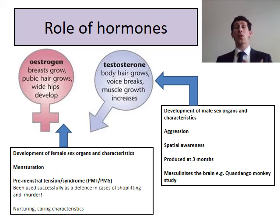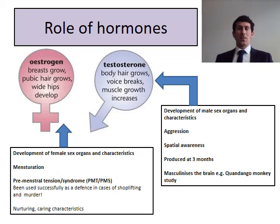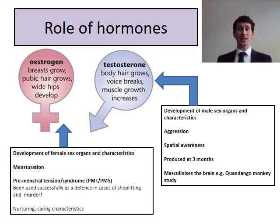Testosterone, on the other hand, is linked to body hair in men — on the face and chest — deepening of the voice, muscle growth, and the development of male sex organs and characteristics. Testosterone has been heavily linked to aggression; the way it changes the brain can result in more aggressive behaviour and also better spatial awareness. It's produced at three months and during adolescence. One key thing testosterone does, especially during prenatal development, is that it masculinizes the brain and changes the pathways in the brain.